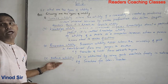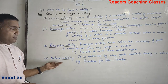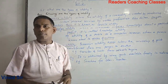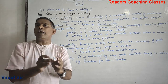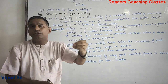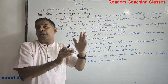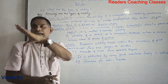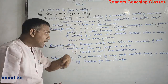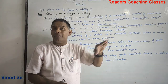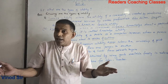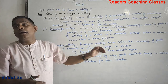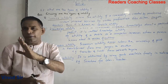Natural utility: it is obtained by using goods available freely in nature. Natural goods are free gifts of nature. For example, sunshine used for solar heat is a case of natural utility.